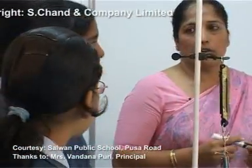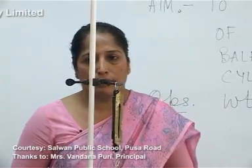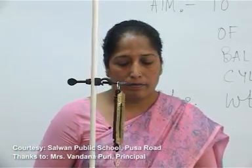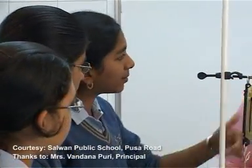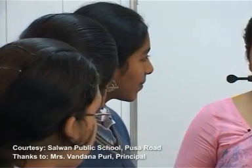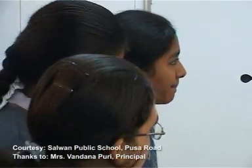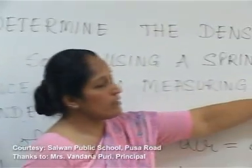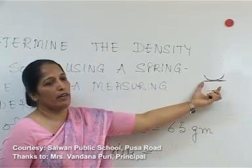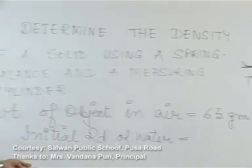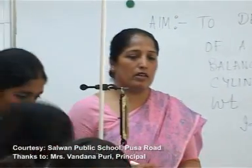For water, as it is transparent, we read the lower meniscus. What is meniscus? It is the shape of the liquid surface where it meets the container and air. This concave shape is called the meniscus. So we read the lower meniscus of water and record the observation.